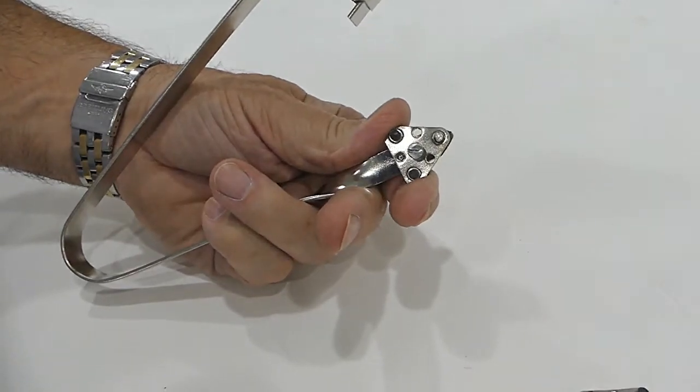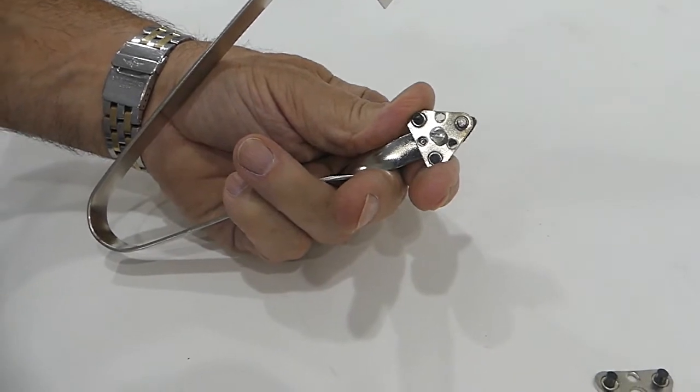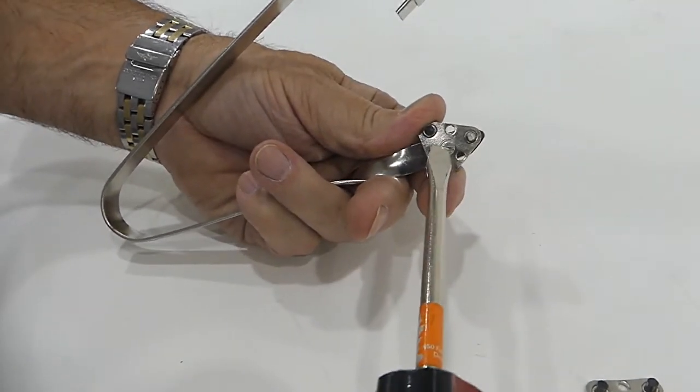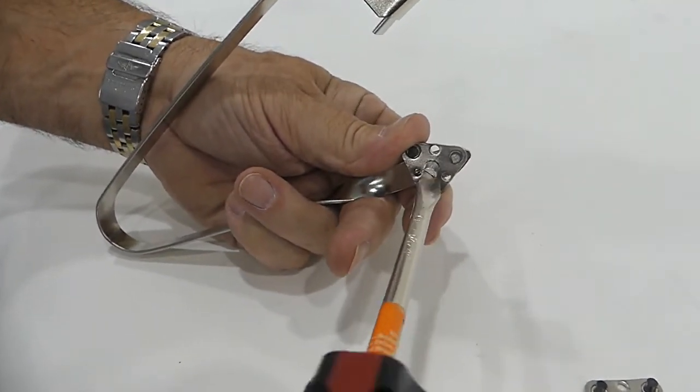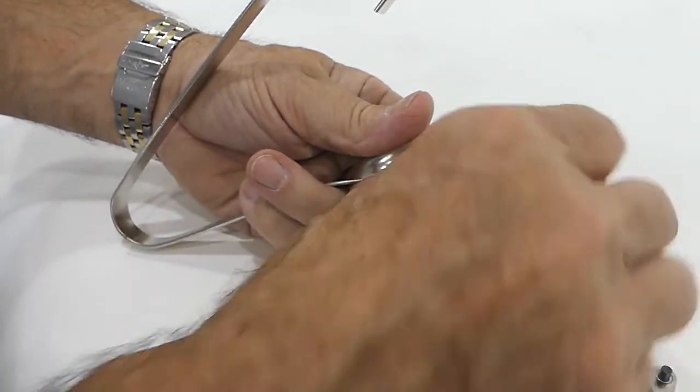Replacing the flint is an easy process. Simply unspring the striker, then using a flat-bladed screwdriver, loosen the screw that holds the flint carousel in place.